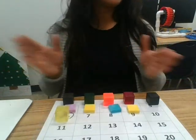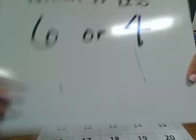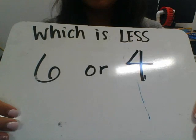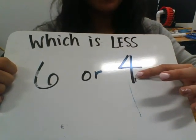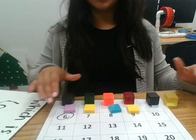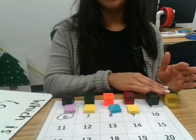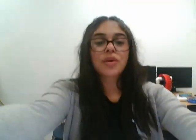Which one is smaller? Which one is less — between 6 and 4? If you said 4, you're correct. 4 is smaller than 6. You see the difference? 4 is smaller than 6. Thank you guys so much for working with me. I'll see you soon. Bye.